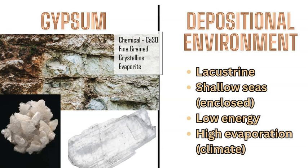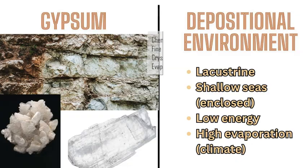Gypsum is a sedimentary rock formed with high rates of evaporation, which infers a certain climate — low energy, shallow seas, or any large lake or pond where there has been a change to the environment with increased evaporation and decreased precipitation and water input. Gypsum is a precipitate mineral that forms a rock.